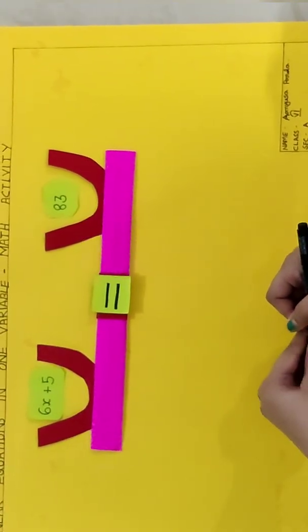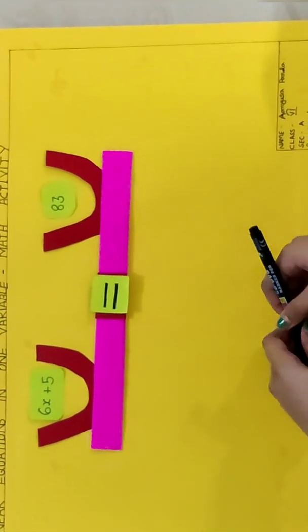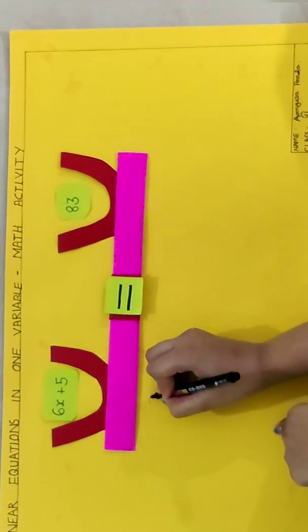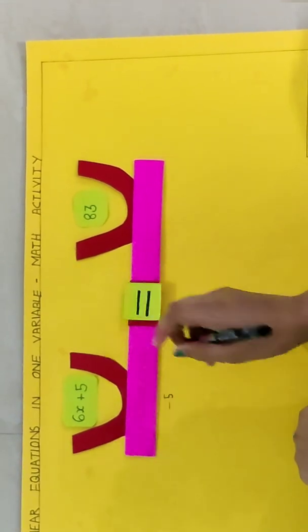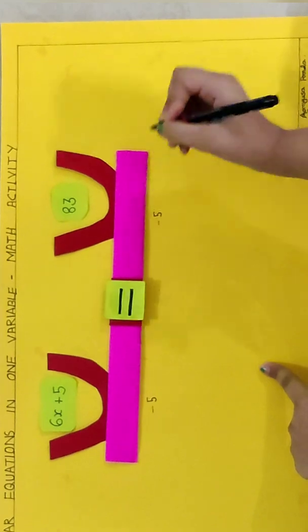To get the value of x, we have to follow some certain steps. So step number 1 is, first we have to subtract 5 from both the sides. We have to subtract 5 from this side also and from this side also.